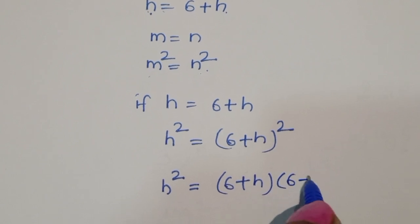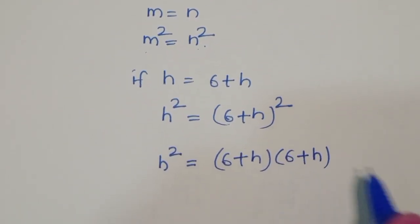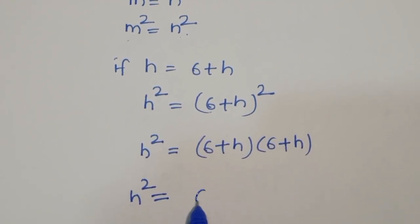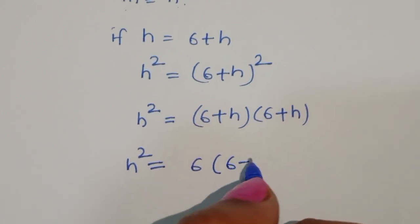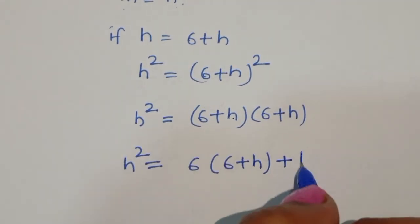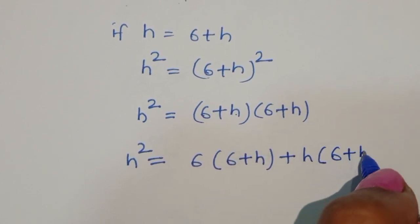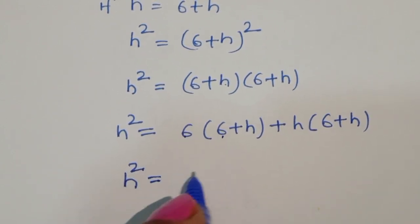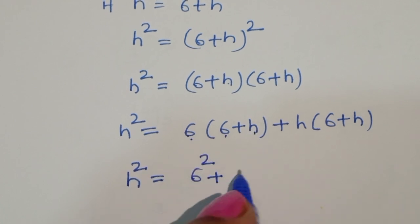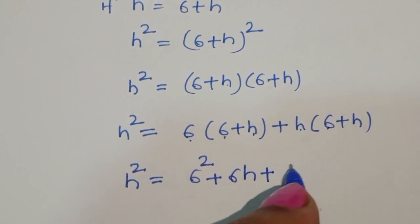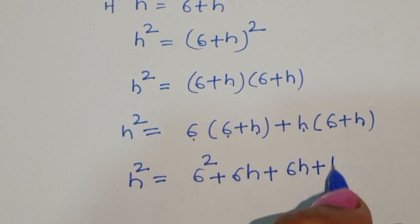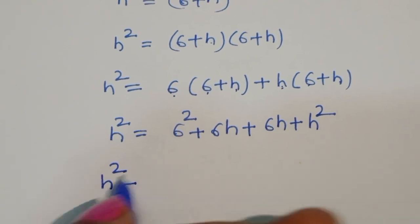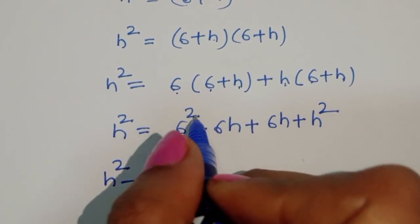We can write (6 plus h) times (6 plus h). Multiplying this out: 6 times 6, plus 6h, plus h times 6, plus 6h. So h squared is equal to 6 squared plus 6h plus 6h plus h squared.